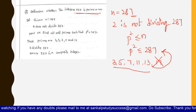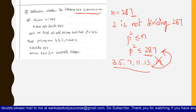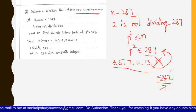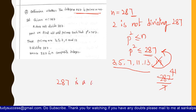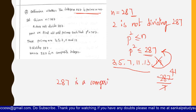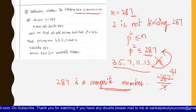Does 3 divide 287? No — the sum of digits is 17, so 3 does not divide it. Does 5 divide 287? No — the units digit is not 5 or 0. Does 7 divide 287? Yes — 7 times 41 equals 287. So 287 is a composite number, meaning it is not prime. Hope you understand this topic. Thank you all for watching the video.